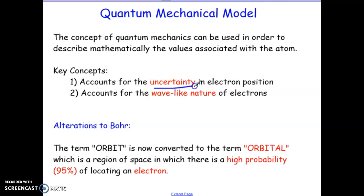Electrons no longer behave the way we would consider particles of matter to behave. They actually move in terms of how energy moves — in wave-like patterns. So we say an electron is really like a wave-like particle: it has a frequency and a wavelength, and that is determined based on the energy of that particular electron.